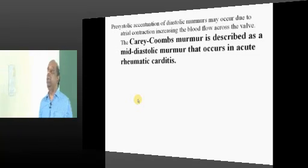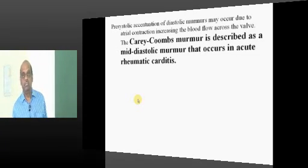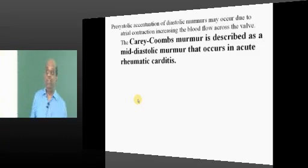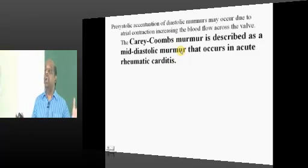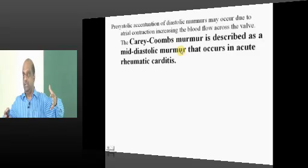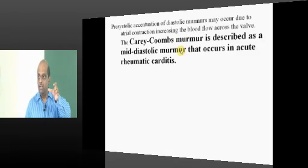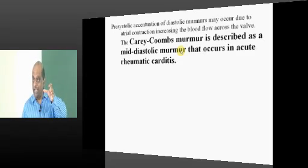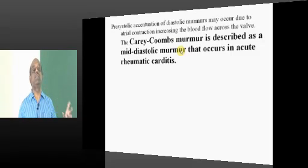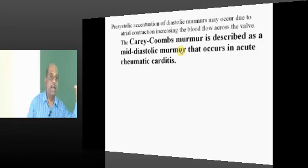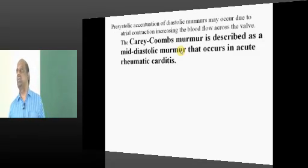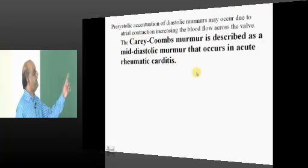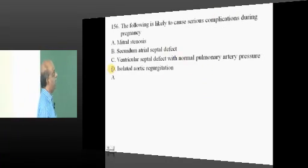One more diastolic murmur to remember is Carey Coombs. When there is acute rheumatic fever, there is a myocarditis which leads to dilatation of the chamber, widening the mitral valve ring, leading to temporary regurgitation and a diastolic murmur — only until acute carditis is present. That is called Carey Coombs. It is also an example of a mid-diastolic murmur in acute rheumatic carditis.